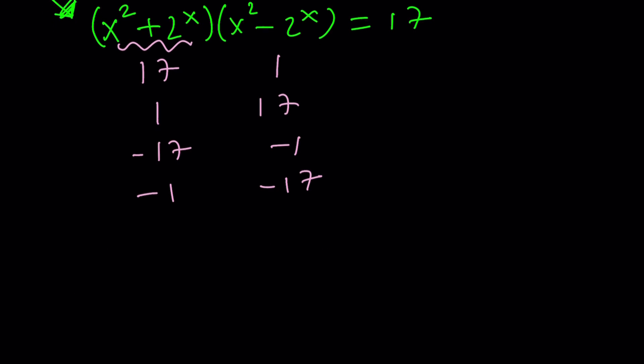So those are the only cases that we have because 17 can only be factored into those. Now, x squared plus 2 to the power of x cannot be negative 17 or negative 1. So these cases are dismissed.